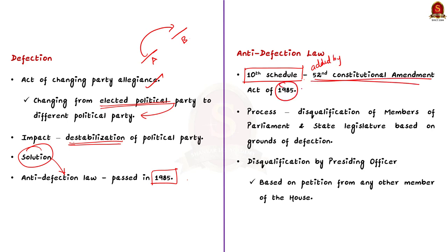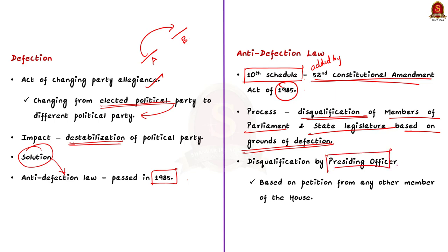The anti-defection law lays down the process to disqualify members of Parliament and members of the state legislature based on grounds of defection. Members are disqualified by the presiding officer of a legislature based on a petition received from any other member of that house. Let us understand some of the provisions of the anti-defection law.